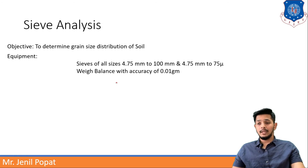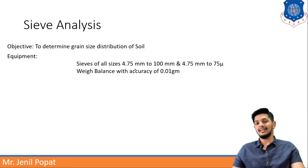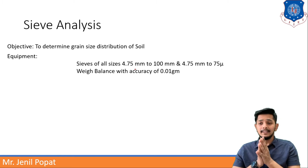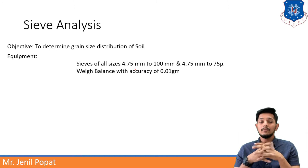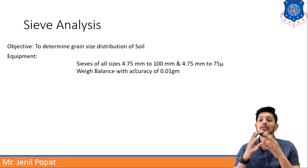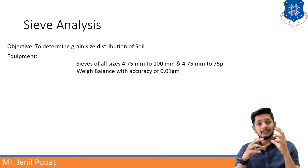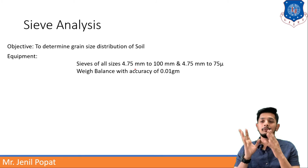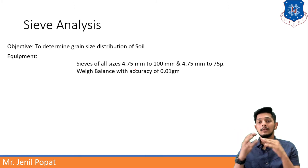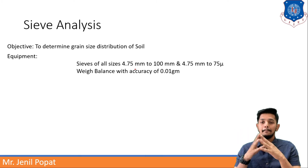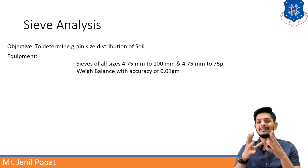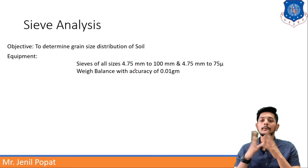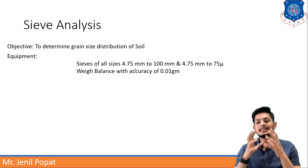Equipment required for sieve analysis is sieves of all sizes from 4.75 mm to 100 mm. IS sieves are sieves of Indian standard. Indian standard suggests some specific sizes of sieves. You need 4.75 to 100 mm different sizes of sieves, and again the second range for fine-size analysis is 4.75 mm to 75 micron size sieves.